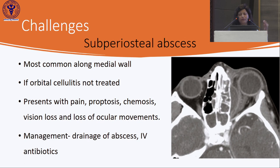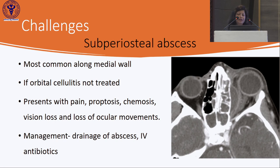Subperiosteal abscess may be missed clinically — it is most common along the medial wall. If orbital cellulitis is not treated, it may progress to subperiosteal abscess presenting with pain, proptosis, chemosis, vision loss, and loss of ocular movements. Management is drainage of the abscess and IV antibiotics.